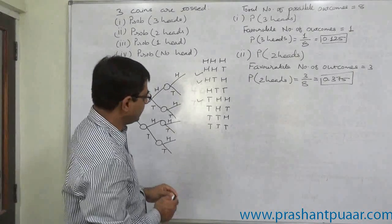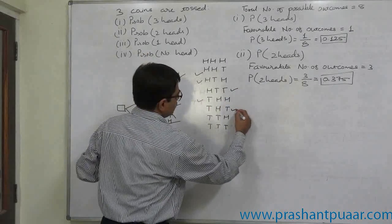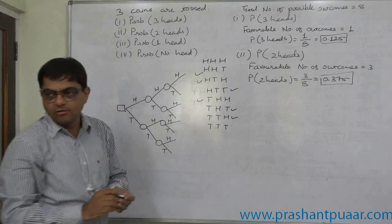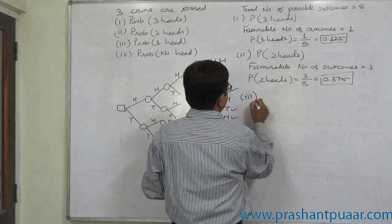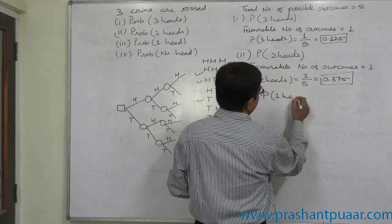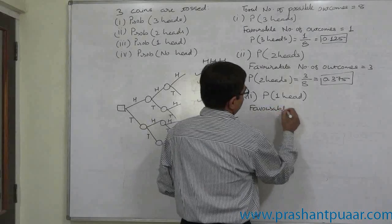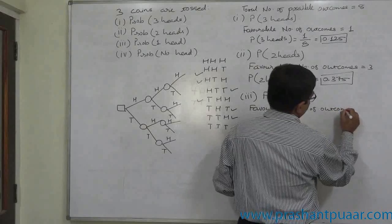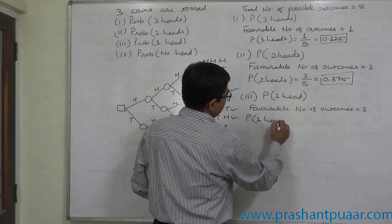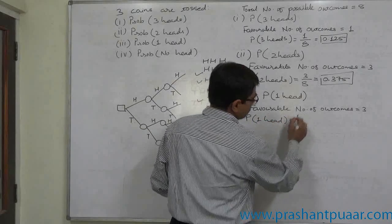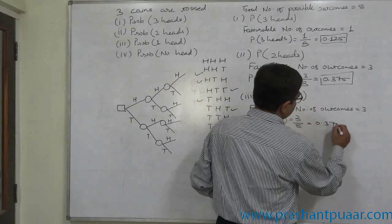The third one is a similar case. Only one head — outcomes 1, 2, and 3 are favorable to the event of getting one head. Favorable number of outcomes is 3, so probability of one head equals 3/8, that is 0.375.